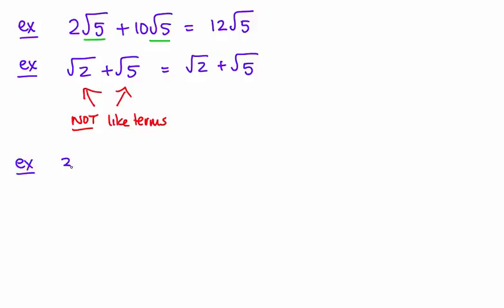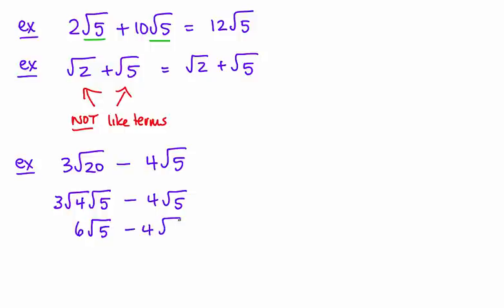Sometimes you get things that look like they have different radicals when in fact they don't. Here it looks like these aren't like radicals, there's a square root of 20 and a square root of 5, but radicals can sometimes be simplified. This square root 20 is really the same as square root 4 times square root 5. By simplifying this first radical, square root 4 equals 2, so 2 times 3 is 6 root 5 and minus 4 root 5, you get a final answer of 2 root 5.